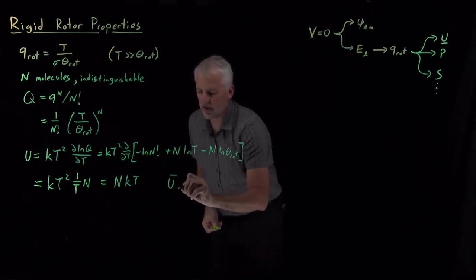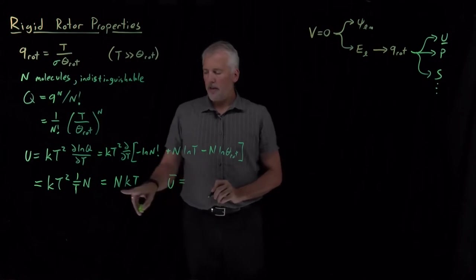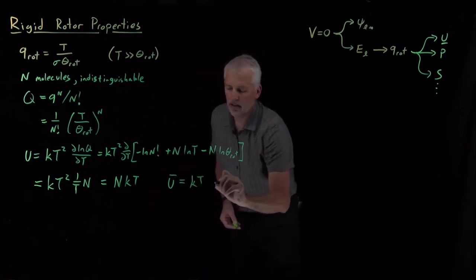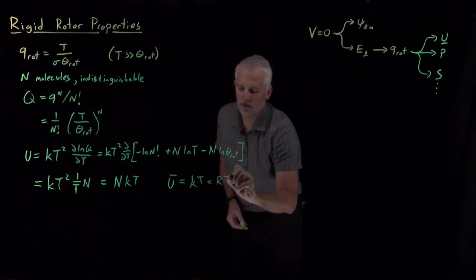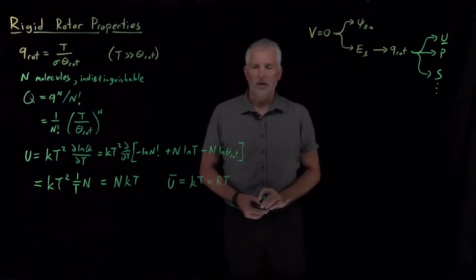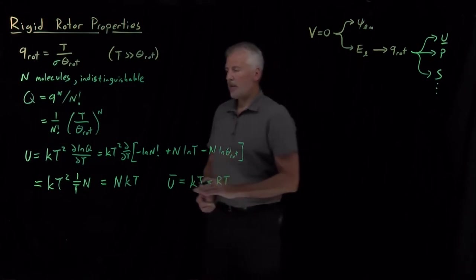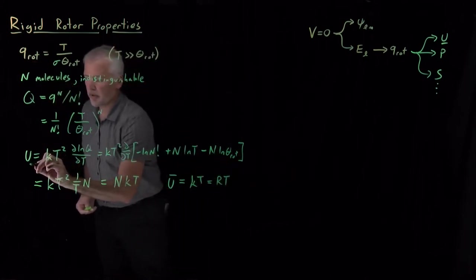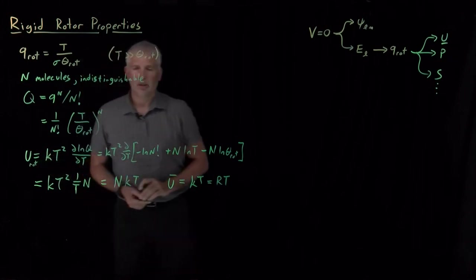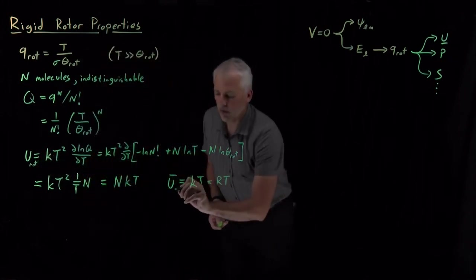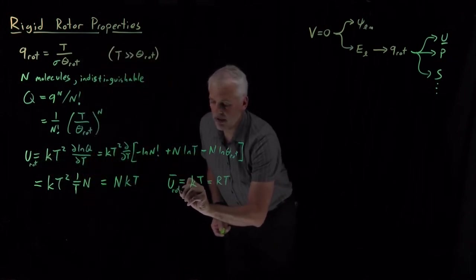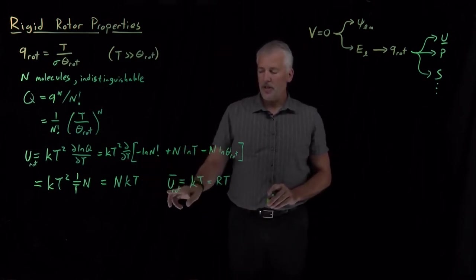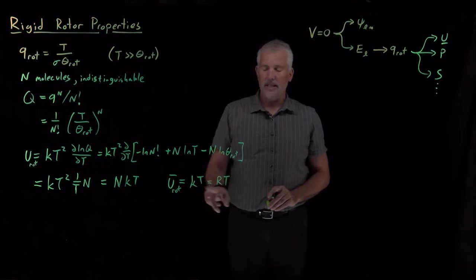If I want an intensive energy, divide by the number of molecules, then I get kT or, if I prefer, RT, since k and R are the same quantity. Let me point out that the energy that we're talking about, this is the rotational energy of the molecules because we're talking about the rotational partition function. What I mean by the rotational energy will be more clear in just a second. So, our answer is that this energy per mole is kT or RT.